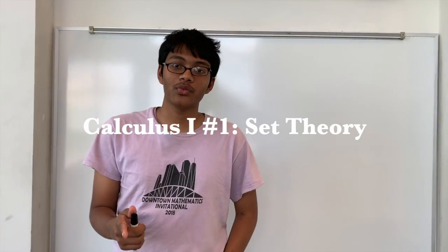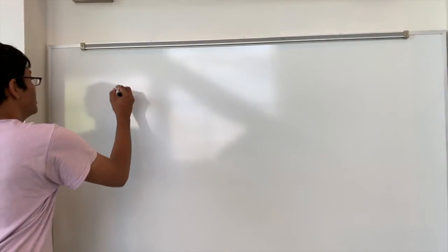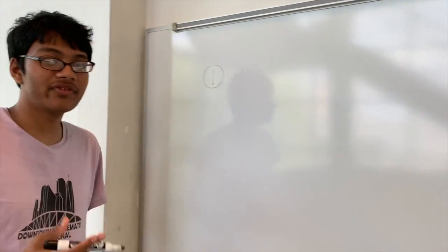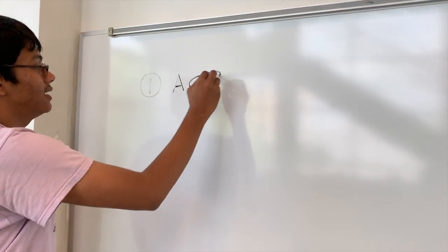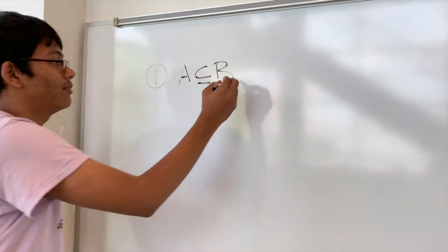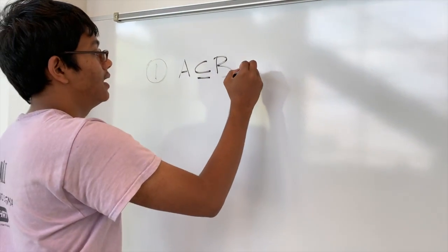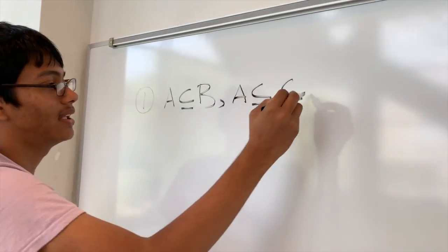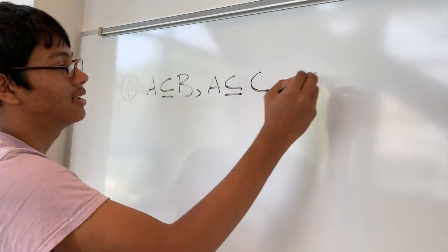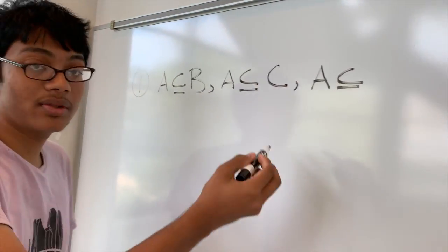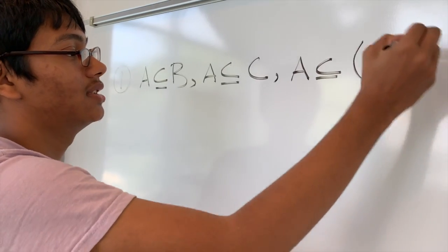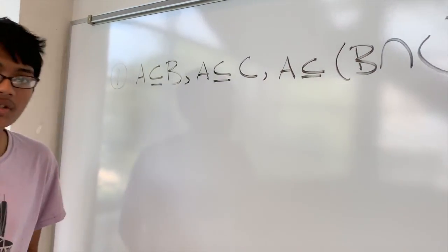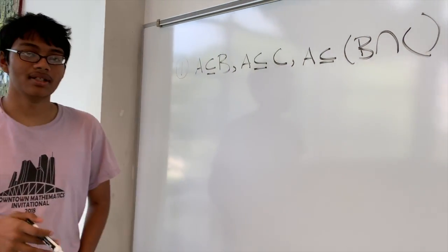Okay, so question one is about set theory. Question one asks us to prove the following statement: if A is a subset of B and A is a subset of C, then A must also be a subset of the intersection of sets B and C. So how can we go about proving this statement?